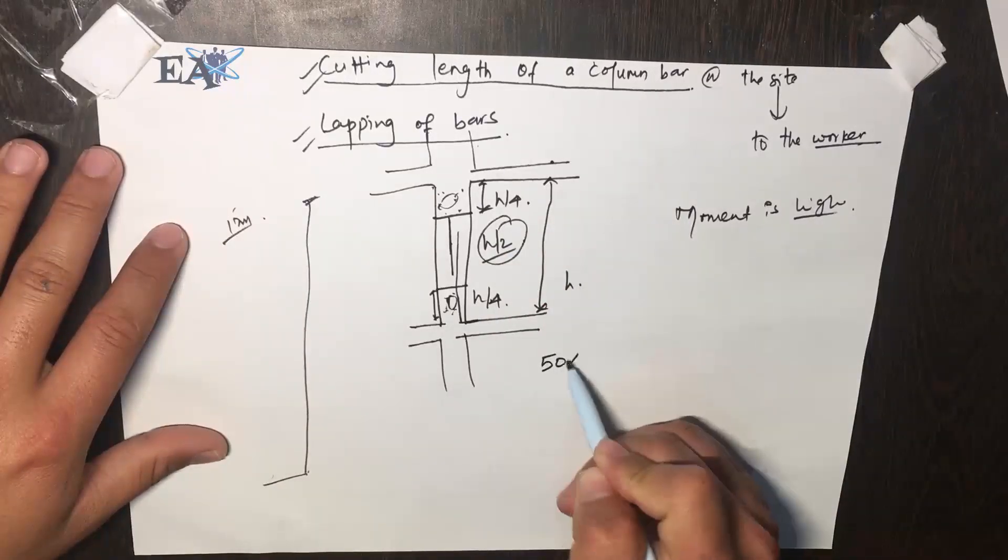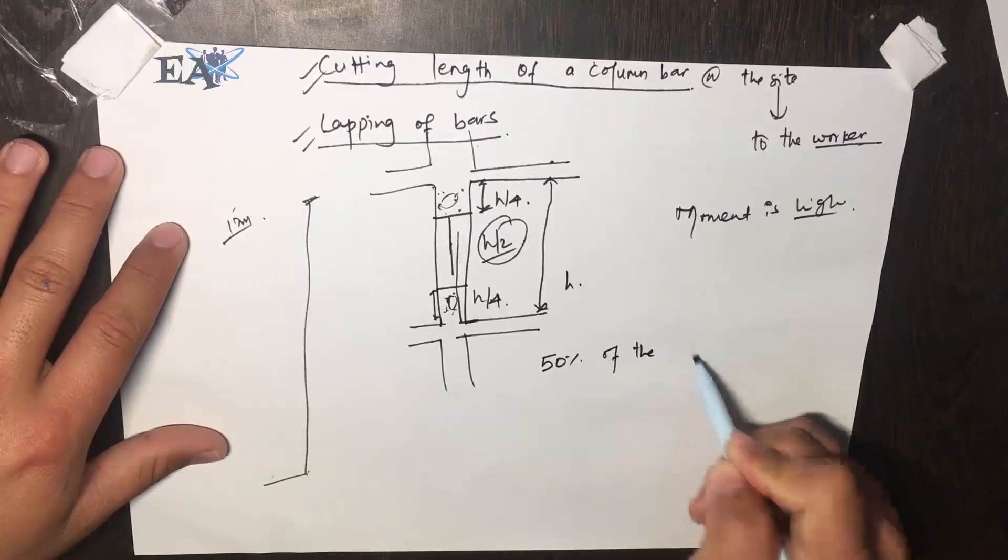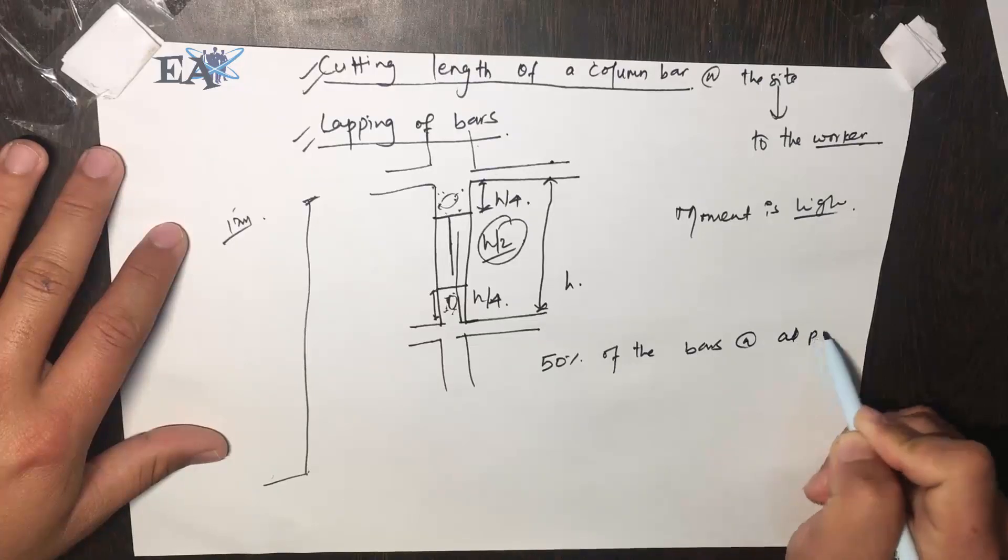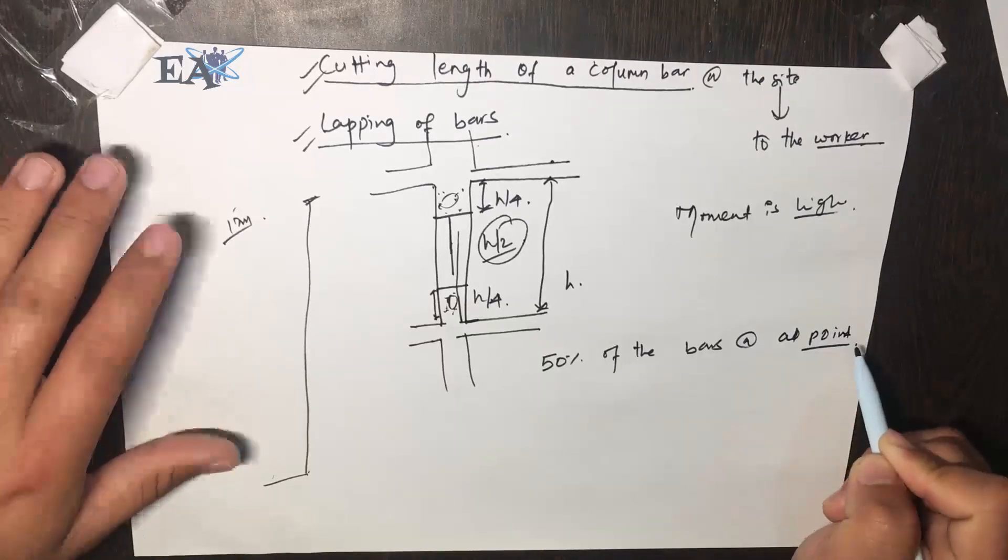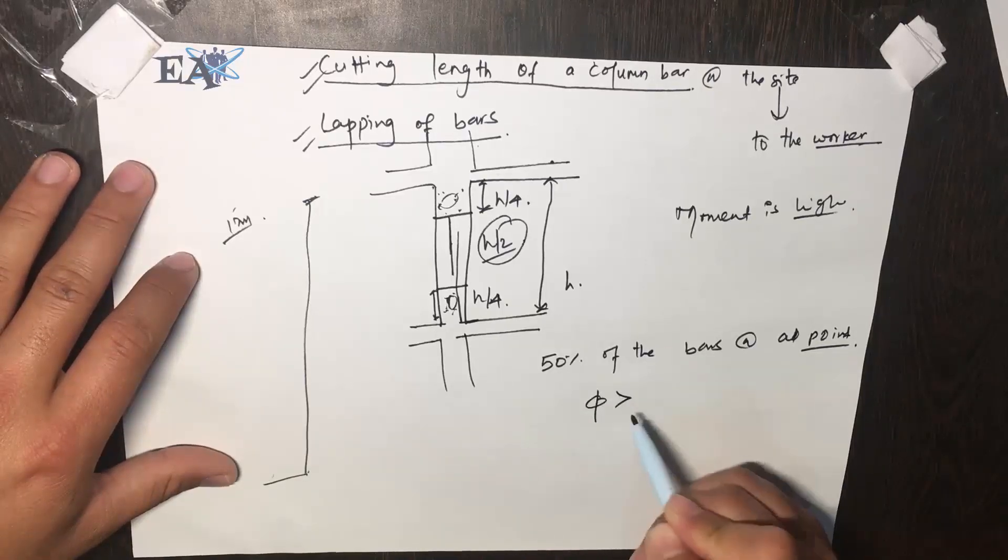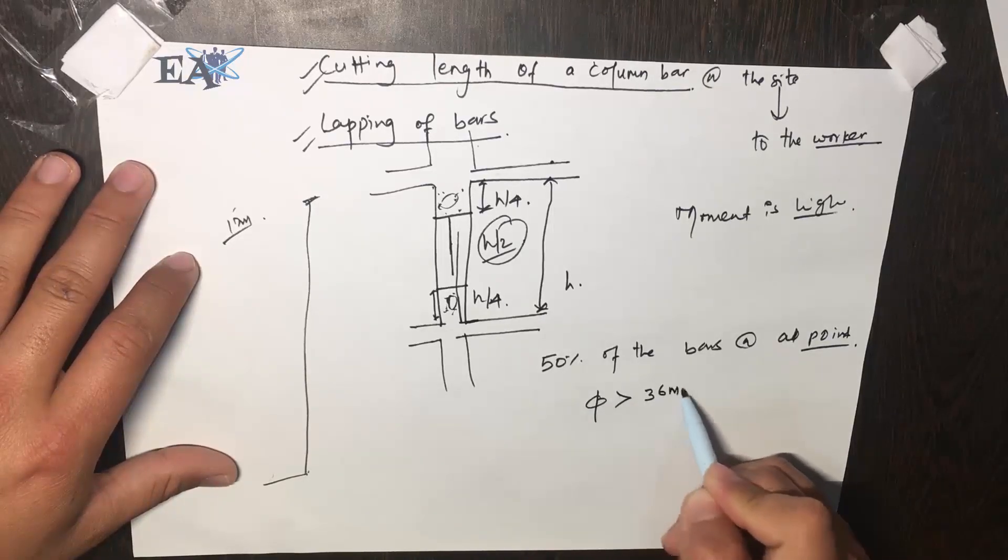While lapping your bars, you have to make sure that you lap only 50% of the bars at a point. At one position, you only lap 50% of the bars, and you cannot lap any bar that has a diameter greater than 36 mm.